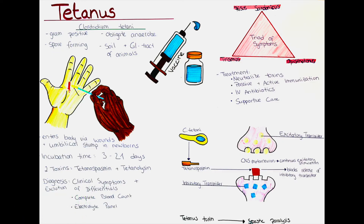What is the prognosis for a tetanus infection? The prognosis for tetanus depends on the severity of the disease, the patient's age, and the timeliness of treatment. Mortality rates can be high, especially in unvaccinated patients. While the mortality rate has decreased significantly due to widespread vaccination, tetanus remains a significant health threat in many parts of the world. In developed countries with adequate vaccination coverage, the mortality rate is relatively low.